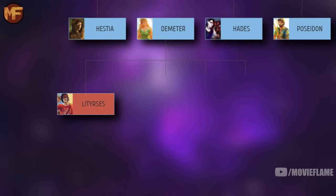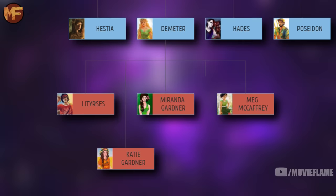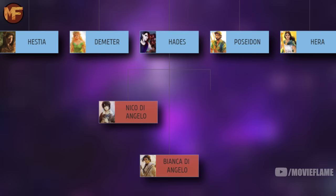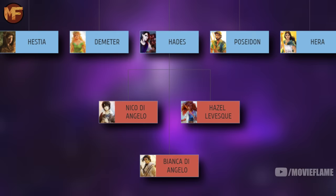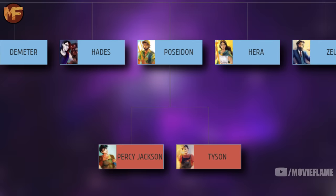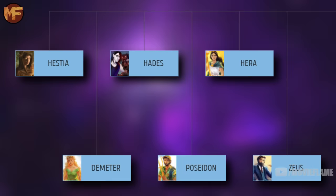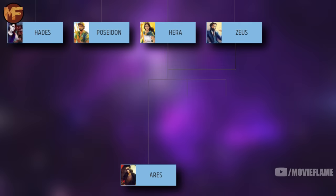Looking at just these siblings, Demeter is the mother of Lityerses from the Trials of Apollo, Katie Gardner, Miranda Gardner who took Katie's spot as head counselor of the Demeter cabin, Meg McCaffrey from the Trials of Apollo, and the Roman demigod Leila. Demeter's brother Hades connects us to Nico and Bianca di Angelo, as well as Hazel Levesque — the second Prophecy of Seven demigod — who was technically born to Pluto, the Roman version of Hades. Poseidon connects us to Percy Jackson, another Prophecy of Seven member, as well as his cyclops brother Tyson. Then Zeus connects us to Thalia and Jason Grace — Thalia being a loyal Hunter of Artemis and Jason being part of the Prophecy of Seven.